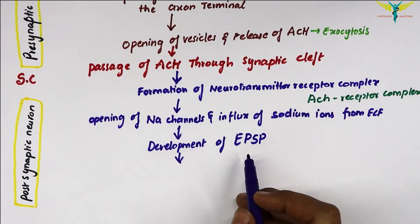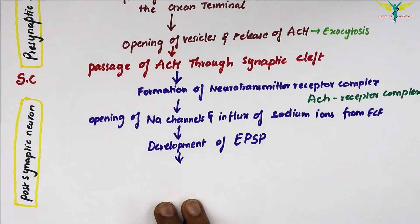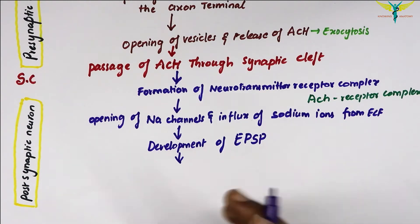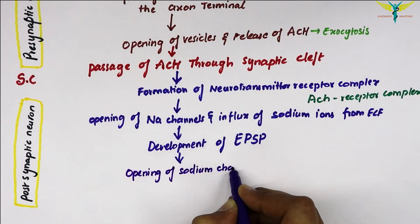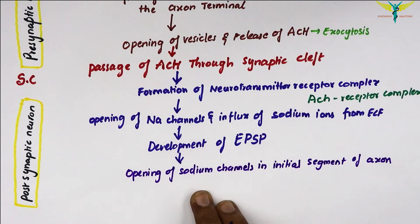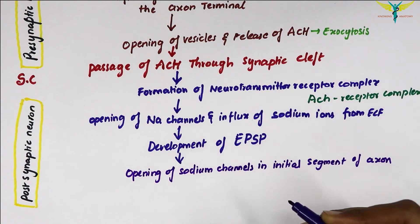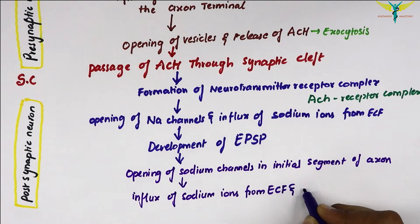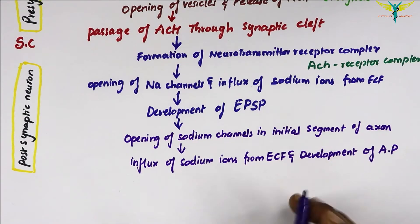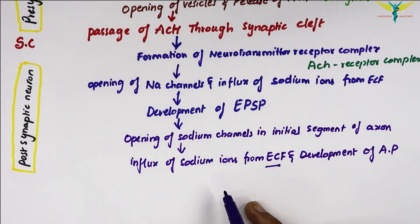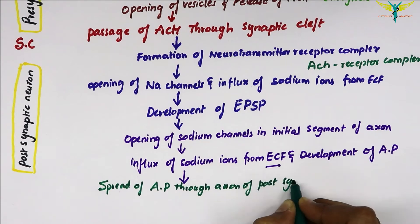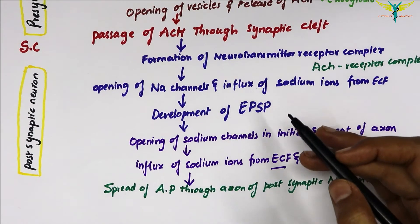The development of the EPSP causes the opening of the sodium channels in the initial segment of the axon. This opening of sodium channels leads to the influx of sodium ions from the ECF, which leads to the development of the action potential. The influx of sodium ions causes the spread of the action potential through the axon of the post-synaptic neuron.